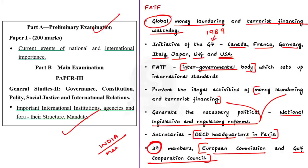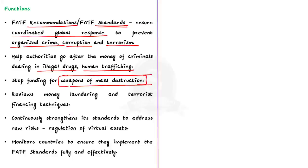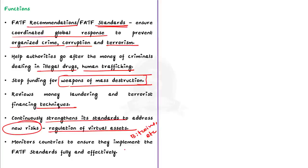The FATF has developed FATF recommendations or FATF standards which ensure a coordinated global response to prevent organized crime, corruption and terrorism. They also help authorities pursue money from criminals dealing in illegal drugs, human trafficking and other crimes. FATF also works to stop funding for weapons of mass destruction, and continuously reviews and strengthens its standards to address new risks — such as regulation of virtual assets as cryptocurrencies gain popularity.